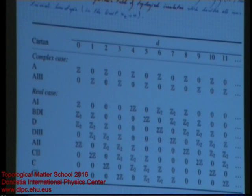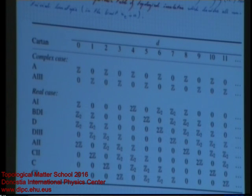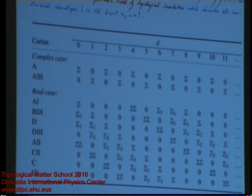That diagonal structure can be understood in various ways, which I'll introduce a little later. Anyway, this table is probably the most essential piece of information you want to have in mind when it comes to topological insulators. I look it up every time.